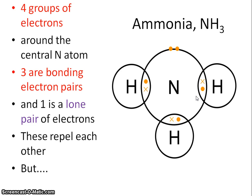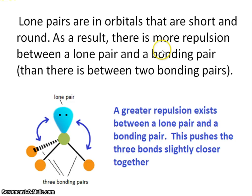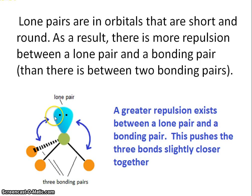Moving on to ammonia, NH3. From the dot-cross diagram, there are 4 groups of electrons, but this time one is a lone pair and three are ordinary bonding pairs. The electrons repel each other, but something different happens: the lone pair brings about a small distortion of the expected shape because lone pairs exert extra repulsion. This is because of their shape — they are much shorter and rounder than an ordinary bond — bringing about an extra repelling effect and pushing the ordinary bonds slightly closer together.